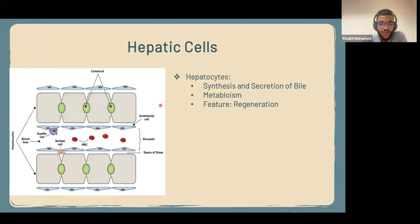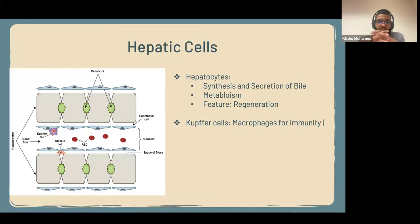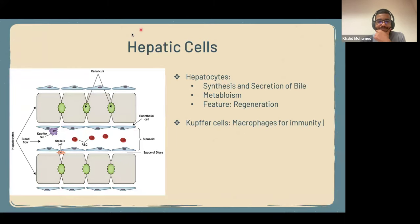Another type of cells are Kupffer cells. These are macrophages that reside in the liver just for immunity. And which zone do Kupffer cells lie in? Zone one — because the macrophages can intercept things as soon as they come in.